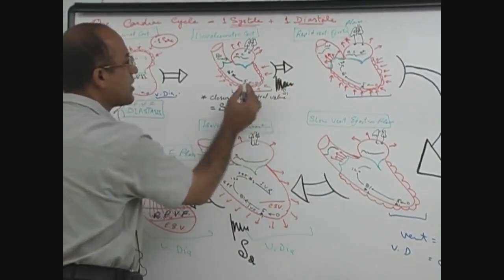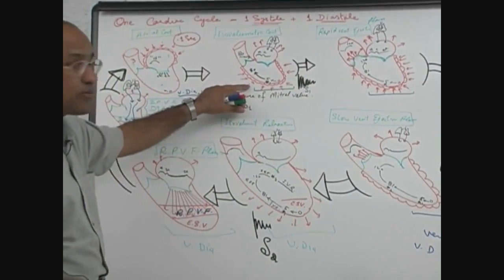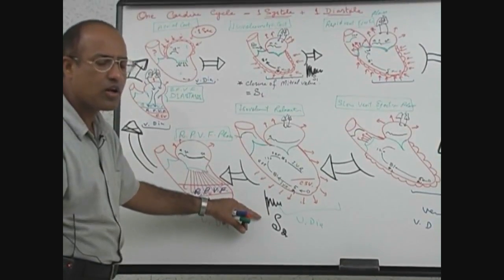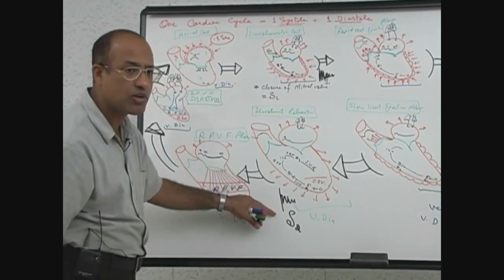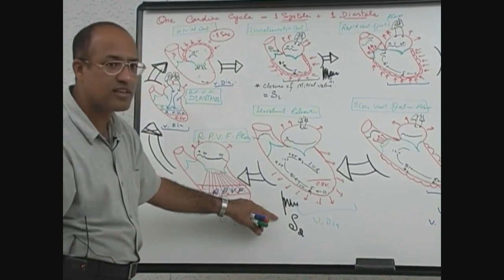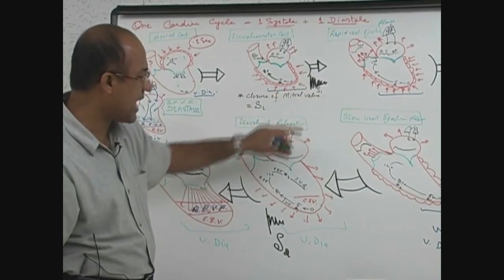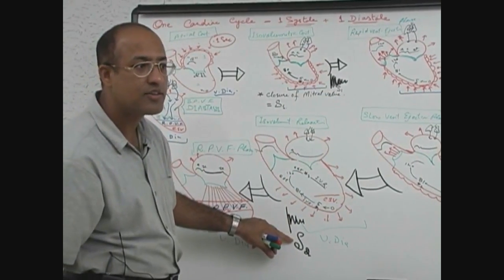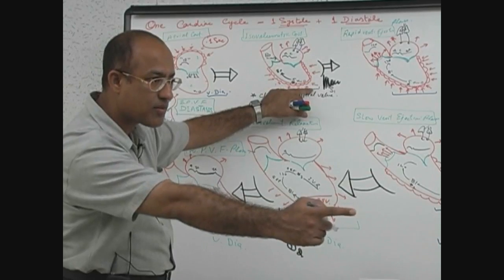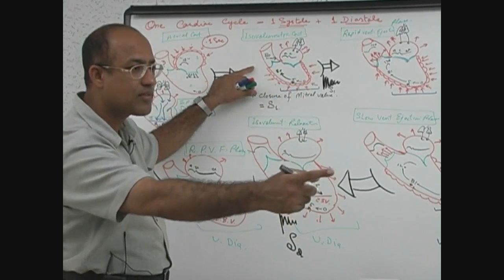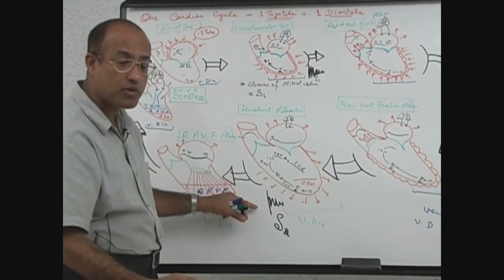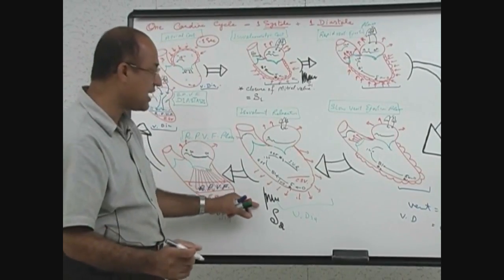S1 is produced due to closure of the mitral and tricuspid valves at the beginning of ventricular systole. S2 is produced by closure of the aortic and pulmonary valves at the end of ventricular systole and at the beginning of ventricular diastole. Between S1 and S2, there is ventricular systole.